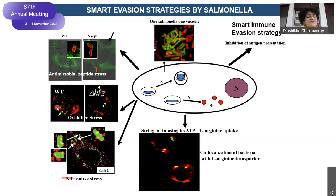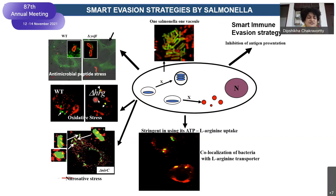If Salmonella encounters macrophages, which deliver a rapid burst of reactive oxygen species, again — because it is protected by the vacuole — it is very safe. The moment you knock out the relevant gene, it becomes very sensitive to hydrogen stress, oxidative stress, or nitrosative stress. The entire success of the strategy is because it lives within the vacuole, and not only that — it lives within a single vacuole.